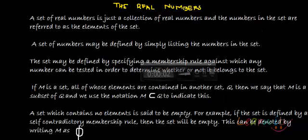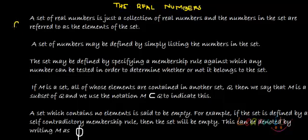In this video we will be talking about real numbers. Real numbers essentially come as a set of numbers, so first of all we need to try and understand what exactly we mean by the word set. A set of real numbers is just a collection of real numbers — a collection of things. The numbers in that set would be called the elements of that set.